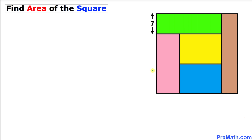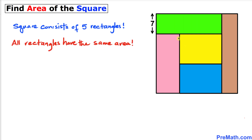Welcome to pre-math. In this video we have a big square that consists of five rectangles, and all these rectangles have the same area — the green, brown, yellow, pink, and blue rectangles all have the same area. Moreover, the side length of this green rectangle has been given to us, which is seven units, and now we are going to find the area of this square.